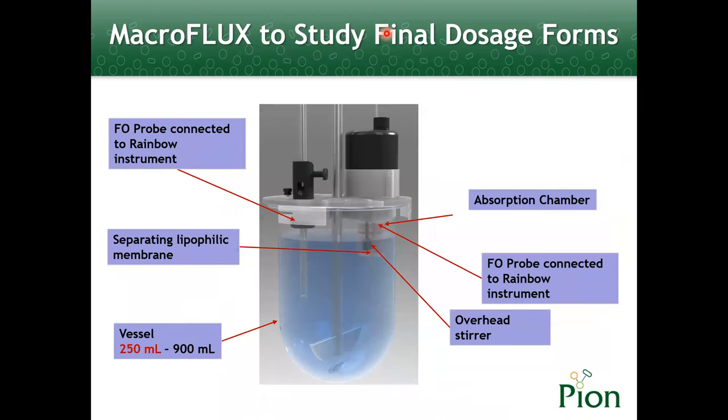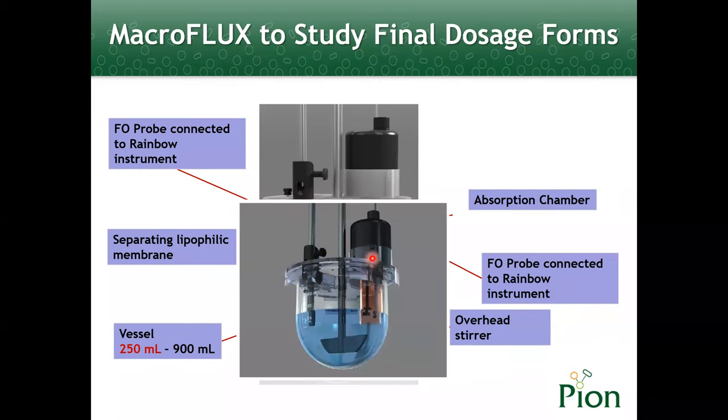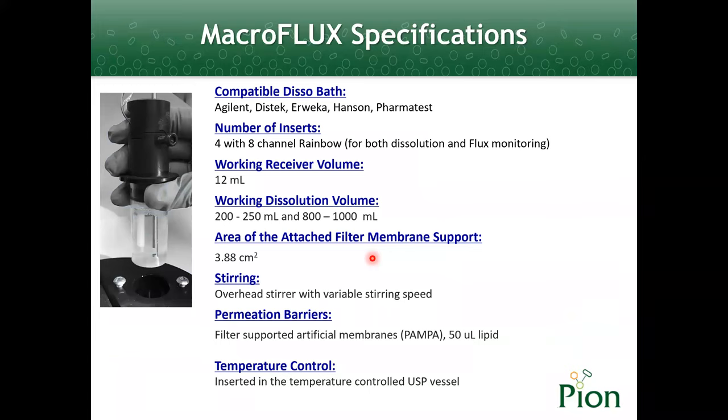So we use fiber optics to detect the concentration change in both chambers. We use biorelevant media in the dissolution vessel to mimic the gastrointestinal environment and use sink condition buffer in the absorption chamber to mimic the blood sink condition. The two compartments are separated using the lipophilic membrane which allows the drug compound to permeate. We could run the assay either in the traditional vessel or 250 milliliter channel vessel. The MacroFLUX is compatible with most dissolution baths sold on the market. Let's take a close look at the absorption chamber. The working volume is about 12-13 milliliters. Inside, this is a 10 millimeter mini fiber optic probe, and the white one is the overhead stir. The artificial membrane is attached at the bottom.